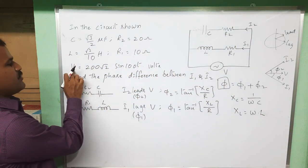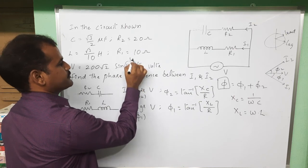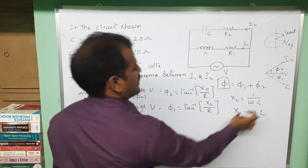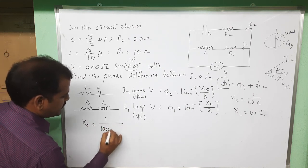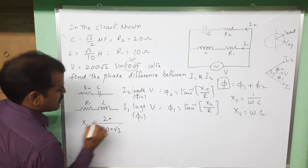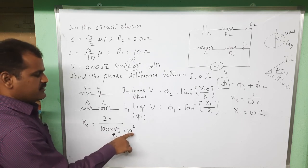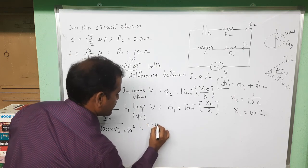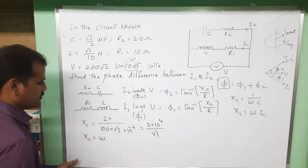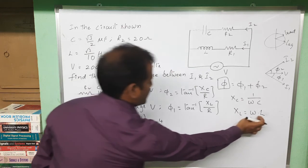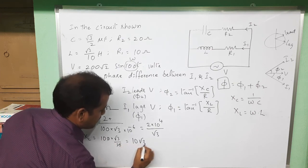From the applied voltage expression 200 root 2 sin(100t), comparing with the standard form gives omega equal to 100. The capacitance C is root 3 by 2 microfarads, so XC equals 1 divided by (omega times C) = 1 divided by (100 times root3/2 times 10 to the power minus 6), giving XC equal to 2 times 10 to the power 4 divided by root 3. For XL, omega times L = 100 times (root 3 by 10), giving XL equal to 10 root 3.